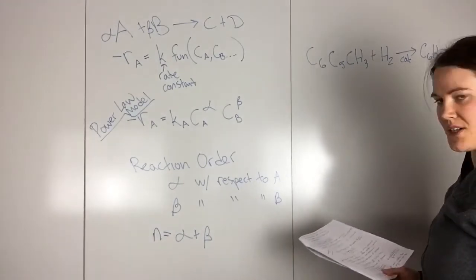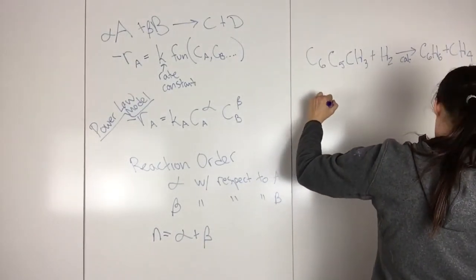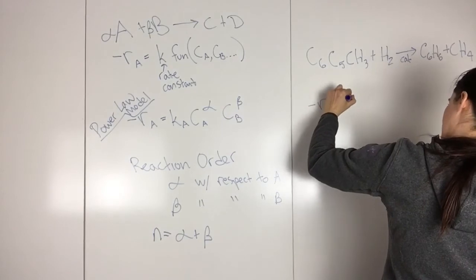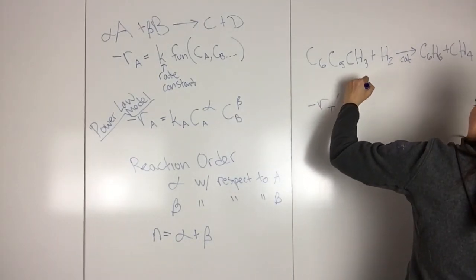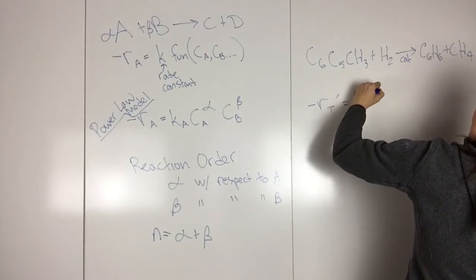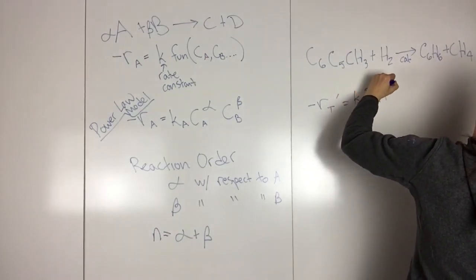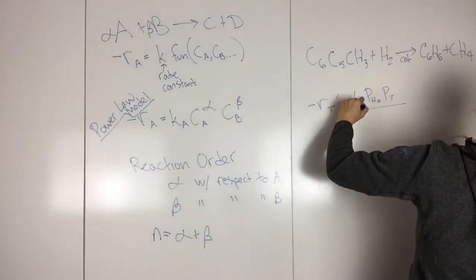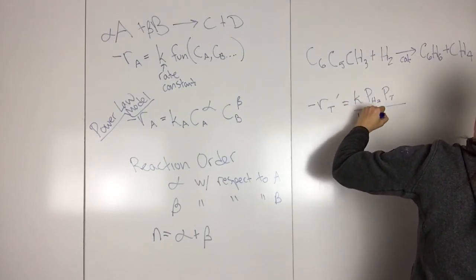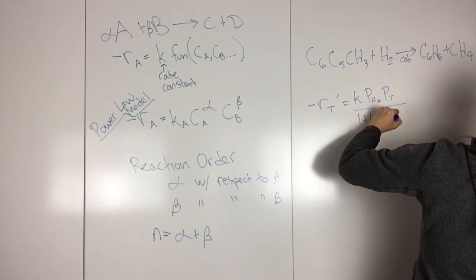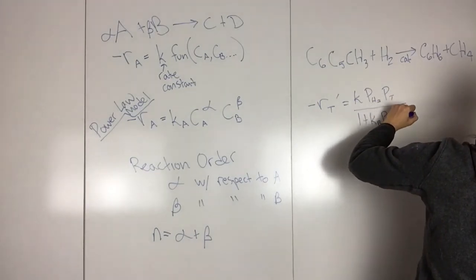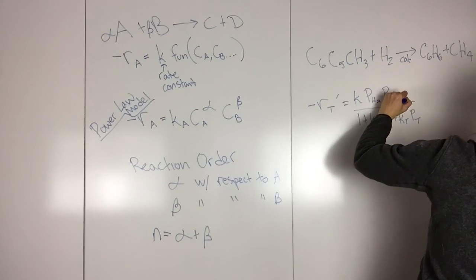And so then for this one, the rate of disappearance of toluene is RT equals K, PH2, PT over 1 plus KB, PB plus KT, PT.